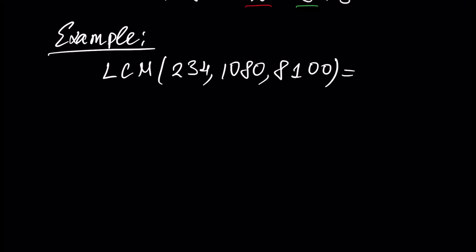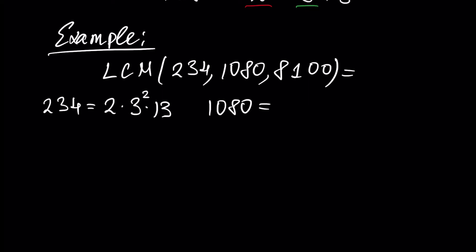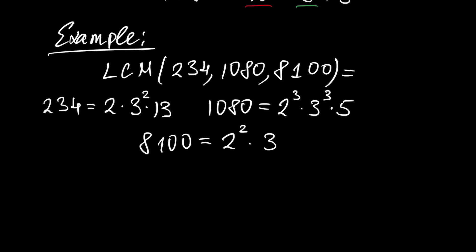Using prime number factorization, we write the factorization for each number. 234 equals 2 times 3 squared times 13. The second number, 1080, equals 2 cubed times 3 cubed times 5. And 8100 equals 2 squared times 3 to the power of 4 times 5 squared.